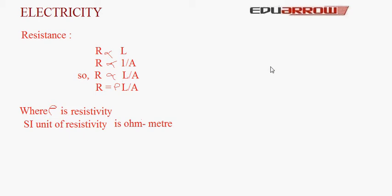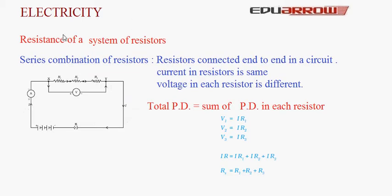Let us now discuss the resistance of a system of resistors. Resistors can be connected in two ways: either in series or in parallel. In a series combination, resistors are connected end to end in a circuit. In this figure, R1, R2, and R3 are connected in series. The current in each resistor in a series combination remains the same.